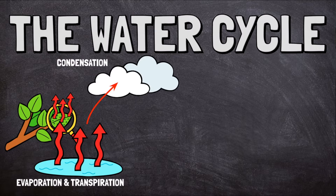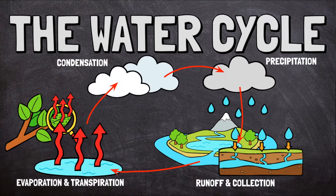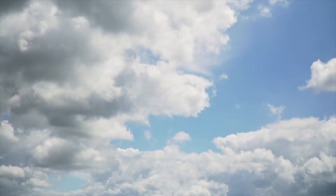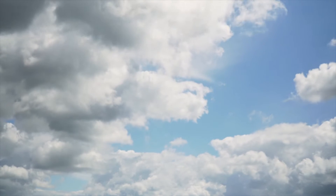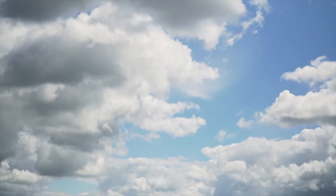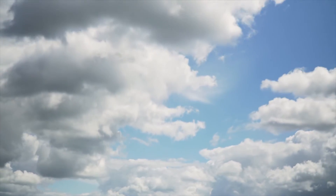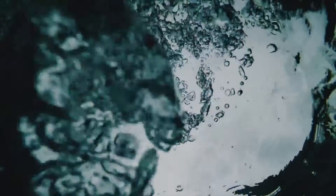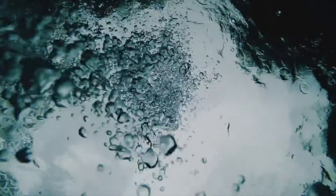Condensation is an important part of the water cycle. It is what causes clouds to form in the sky. Condensation is the opposite of evaporation. When water evaporates, it changes from a liquid into a gas called water vapor. When water condenses, it changes from water vapor gas back into a liquid.